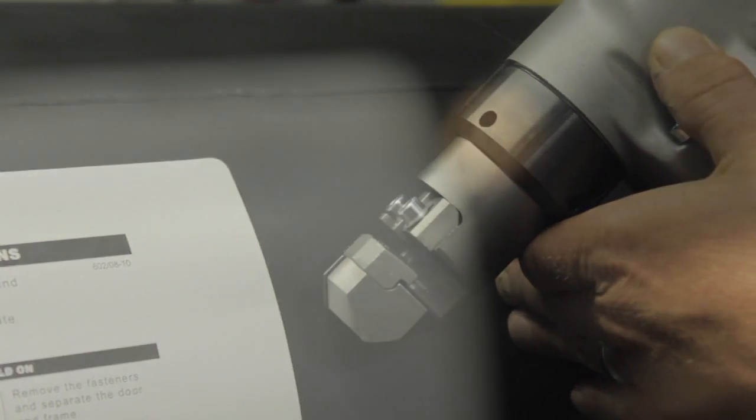Peel backing off the template and apply to duct in the desired location. Cut around the end of the template.